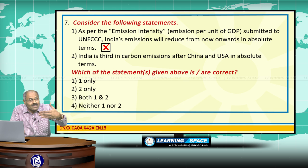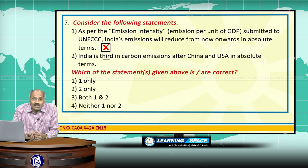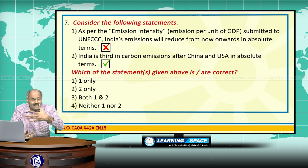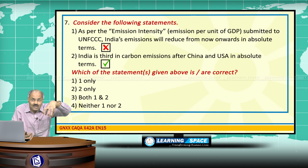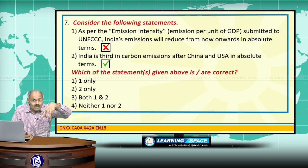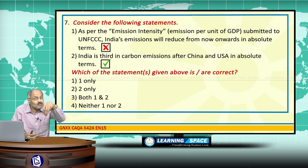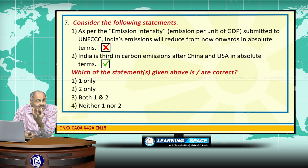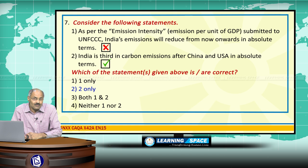The second statement — that India is third in carbon emissions after China and the USA in absolute terms — is correct. China is the largest contributor at around 25%, followed by the USA at around 15%; together they contribute around 40% of world carbon emissions. India is at third position among individual countries. If the European Union is considered as one block, EU comes third and India falls to fourth. So the right option is 2.